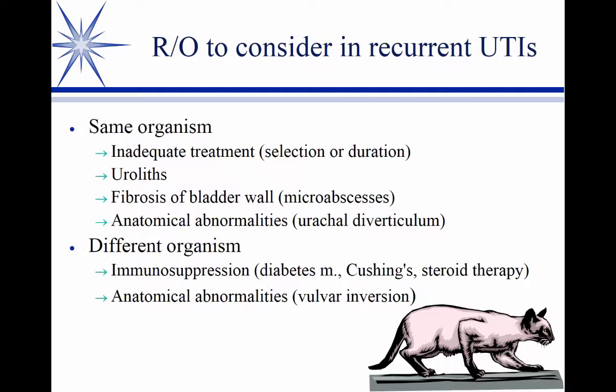Recurrent UTIs are a big problem. How I work it depends on whether it's the same organism or a different organism, because that implies different causes of failure. How do you know it's the same organism short of a DNA fingerprint? In the clinical setting, you look at whether it's the same genus — E. coli, staph, whatever — and you look at the antibiogram. If it's the same organism, it will have the same antibiotic susceptibilities, with the exception that it's now resistant to whatever you used to treat it.